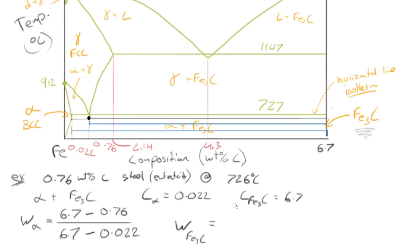Well, it has to be the other side of the lever, right? So that's going to be 0.76 minus 0.022 divided by 6.7 minus 0.022.